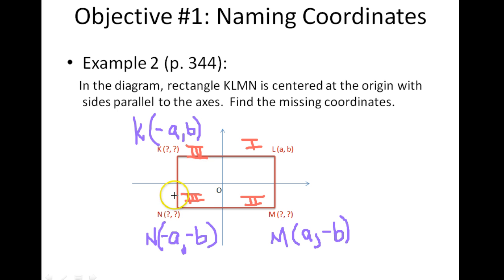So these quadrants tell us what signs our coordinates are going to have, positive or negative. Any point that lies in quadrant 1 is going to have a positive x-coordinate and a positive y-coordinate. For quadrant 2, any point that lies within quadrant 2 is going to have a positive x-coordinate because it lies on the right-hand side of the origin, but a negative y-coordinate because it lies below the origin.